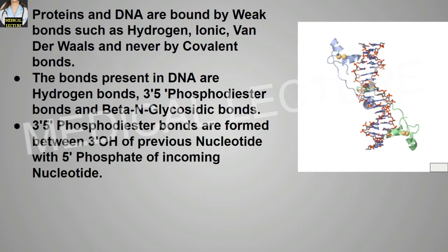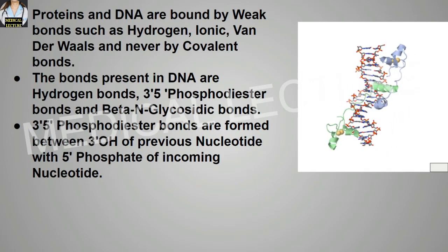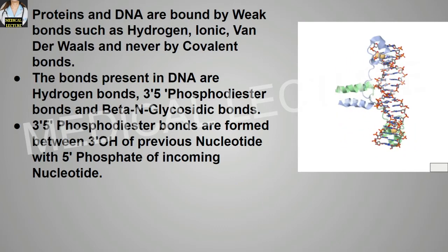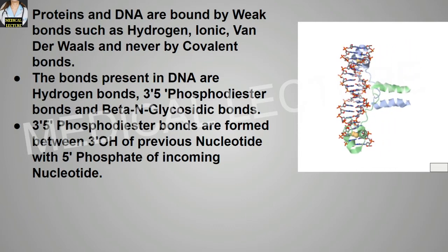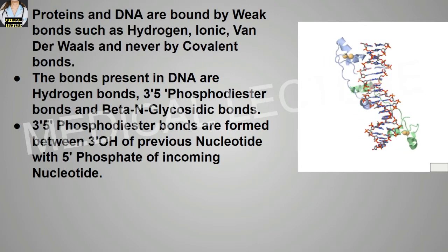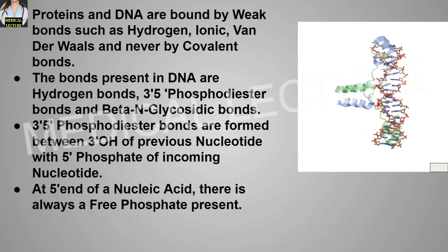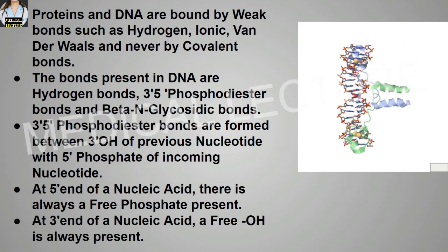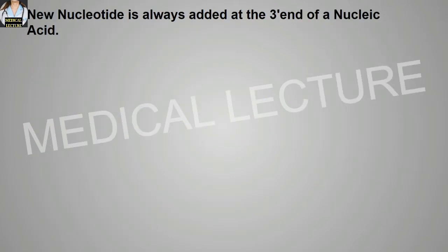3'-5' phosphodiester bonds are formed between the 3' hydroxyl group of the previous nucleotide and the 5' phosphate group of the incoming nucleotide. At the 5' end of a nucleic acid, there is always a free phosphate group present. At the 3' end of a nucleic acid, a free hydroxyl group is always present. A new nucleotide is always added at the 3' end of a nucleic acid.